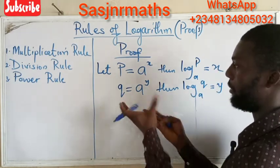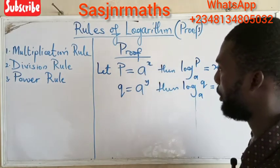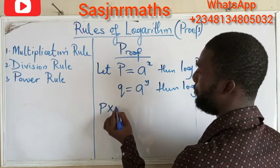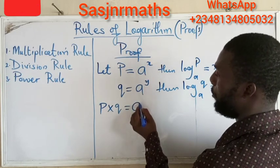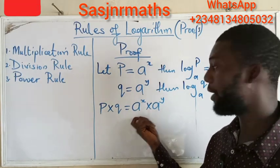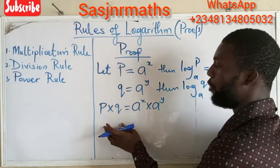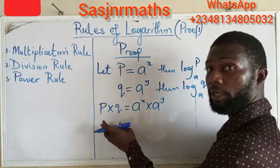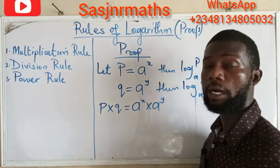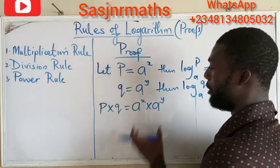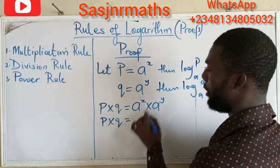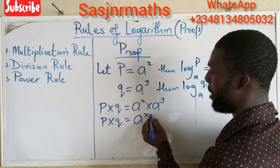Now that we have the indices form and their logarithmic equivalents, we will proceed by multiplying p and q. So p times q equals a raised to power x times a raised to power y. Using the law of indices, since the two bases a are identical, we pick one base and add the powers together: p times q equals a raised to power x plus y.